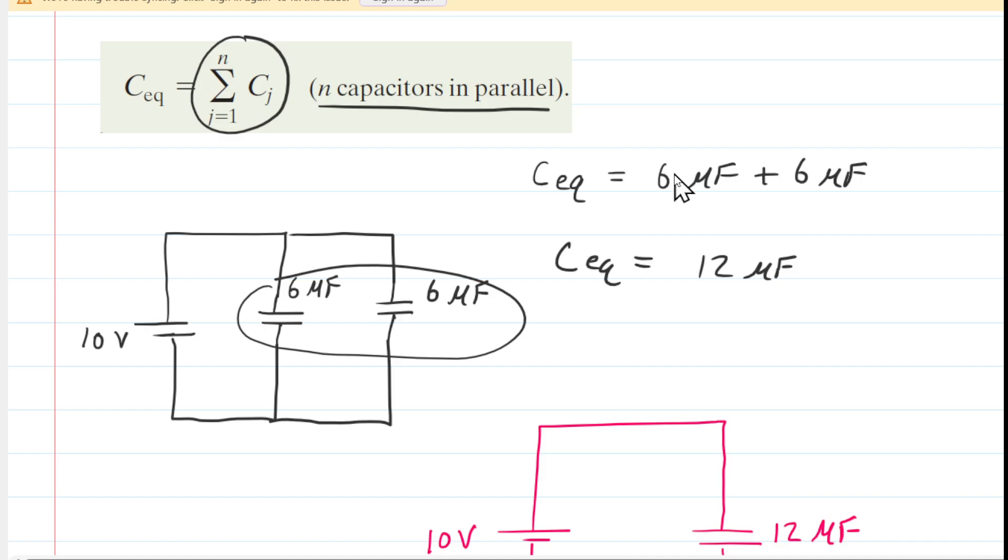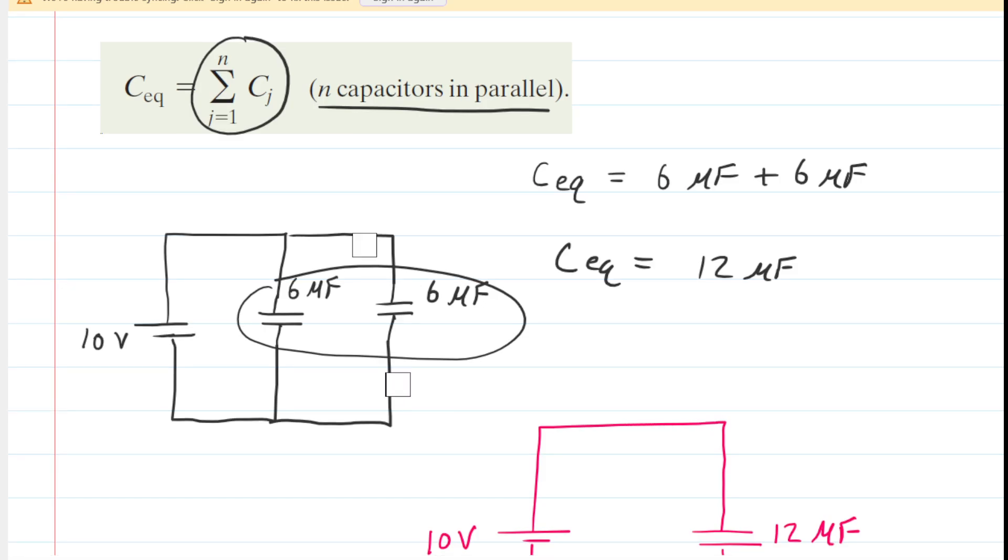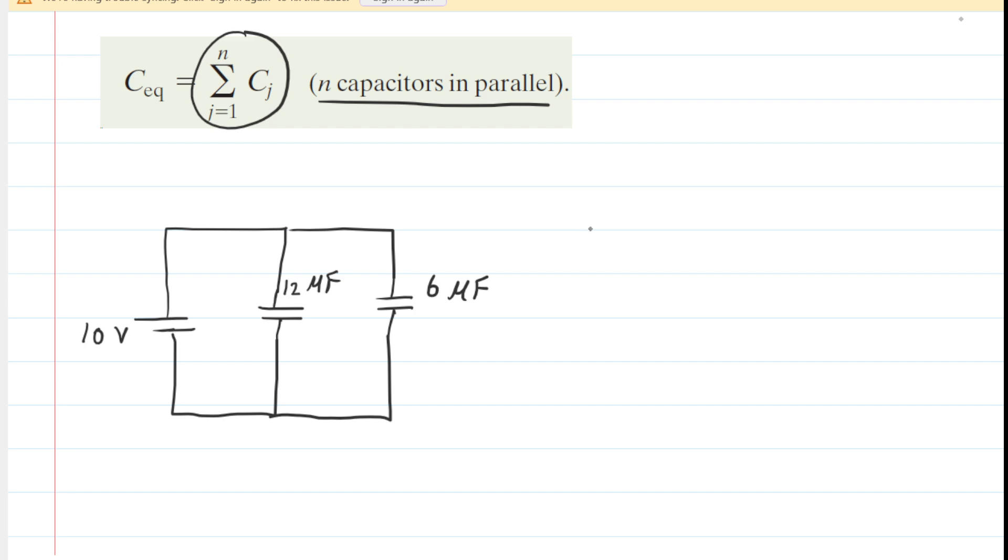We're going to redraw our circuit, but for one of the capacitances, we're going to double its value. Now the question is, what impact does that have on the amount of charge that this circuit can store? We can proceed by the same steps as earlier. The equivalent capacitance is the sum of the individual capacitance values. This time when we sum them, we have an equivalent capacitance of 18 microfarads.